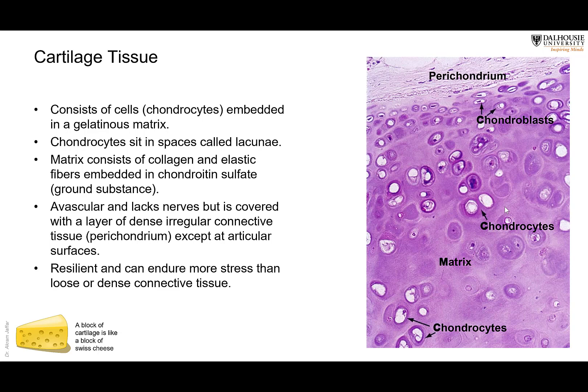There is also a matrix. The matrix consists of collagen and elastic fibers, and there are different amounts of collagen and elastic fibers in different types of cartilage. There is also a ground substance — chemicals. The main chemical is called chondroitin sulfate. You may have heard of this chemical before, as it is sometimes found in supplement products in shops, used to replace worn and torn cartilage.